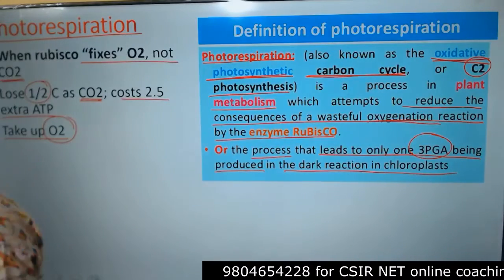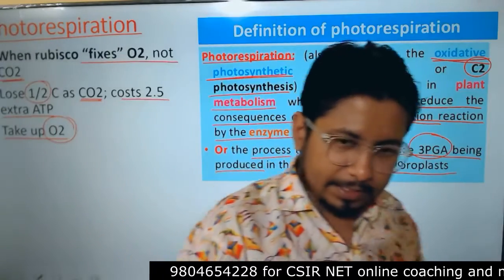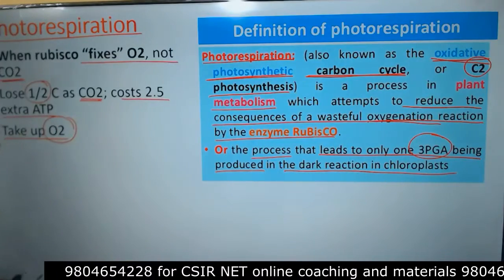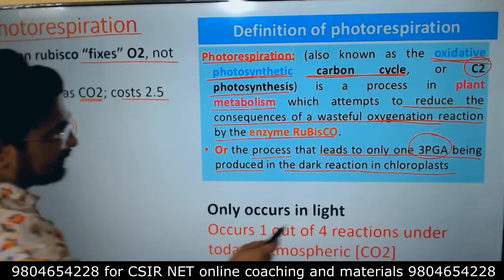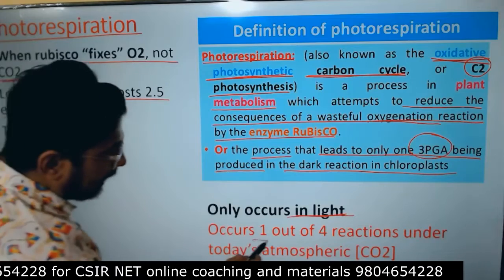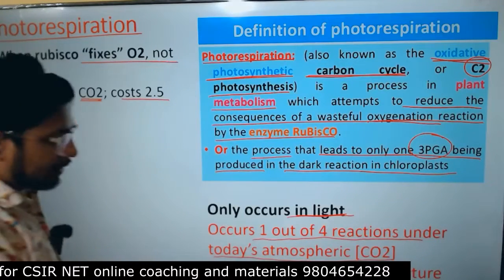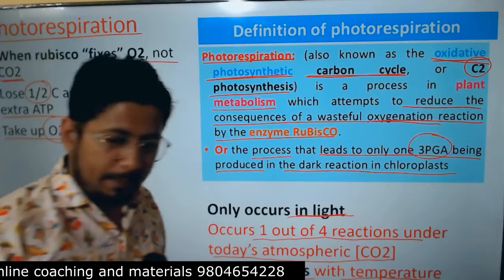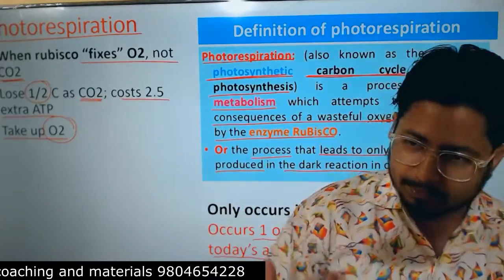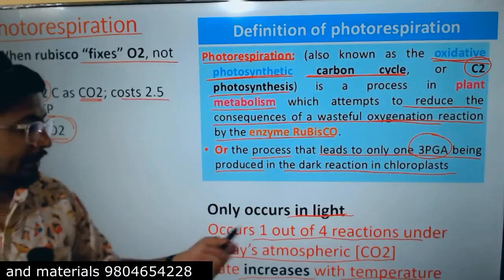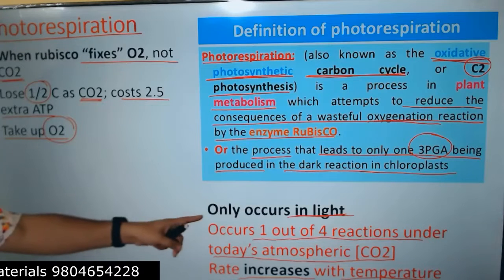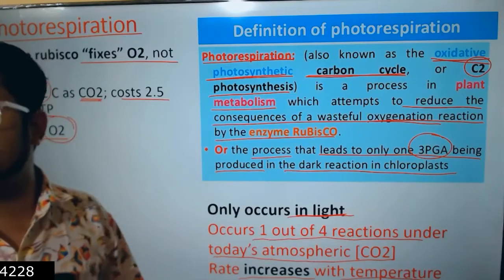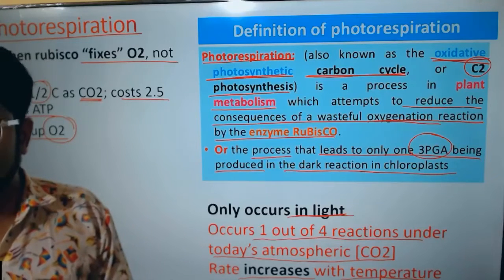Photorespiration is called 'respiration' because of the utilization of oxygen, but it is not actually a true respiration process — plants have a separate electron transport chain for real respiration. Photorespiration is purely wastage of oxygen, carbon, and energy. It only occurs in the presence of light, increases with higher temperature due to increased oxygen utilization and water demand, and occurs in one out of every four reactions under today's atmospheric CO2 concentration.